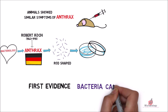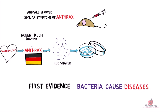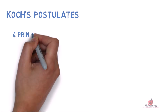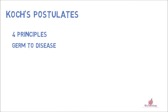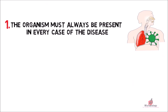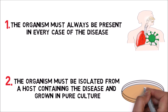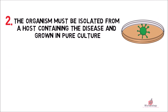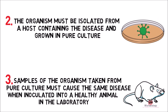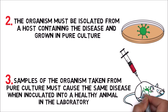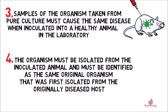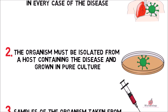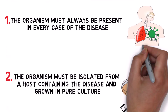Koch finally provided the first evidence that bacteria are the causative agents of diseases in animals. This led him to establish Koch's Postulates — a series of four principles to support the germ-to-disease concept: (1) The organism must always be present in every case of the disease. (2) The organism must be isolated from a host containing the disease and grown in pure culture. (3) Samples from the pure culture must cause the same disease when inoculated into a healthy animal. (4) The organism must be isolated from the inoculated animal and identified as the same original organism first isolated from the diseased host.